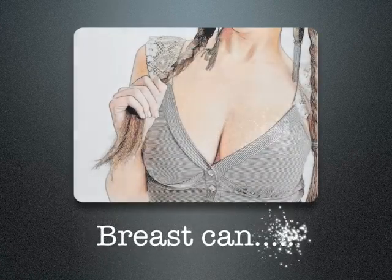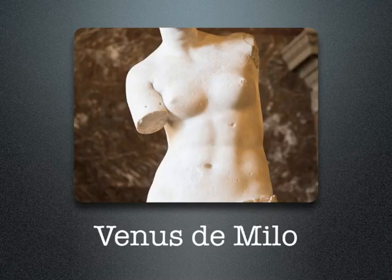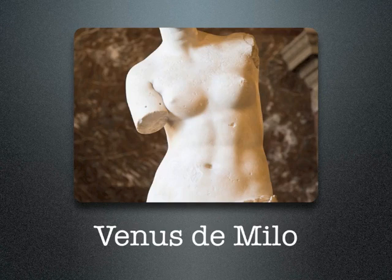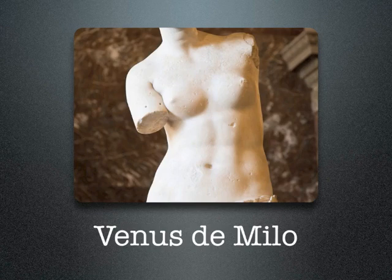Today we're going to talk about how breasts sag and the definition of sag. We'll start with this statue of Venus de Milo. When you look at the breast, right under the breast where it meets the chest, there's a natural breast fold. If you compare it to the top of the chest, the top kind of blends — there's not a natural fold there. Under the breast there is, and that's called the inframammary fold, or the breast fold.